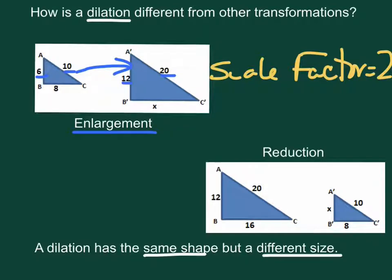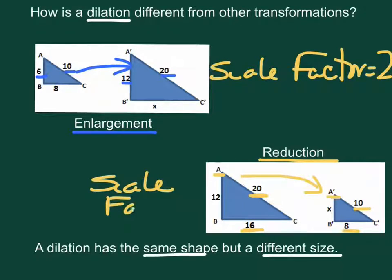Now with this one down here, we would see that A was the original figure and it went to A prime, so this triangle was actually considered a reduction because it got smaller. And if you'll look at the sides, you can tell how much smaller. Each side was half. So we would actually say that the scale factor of this dilation was one-half.